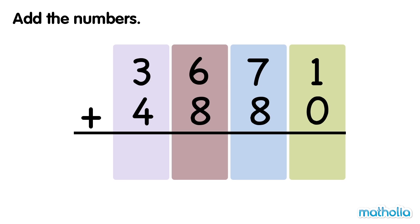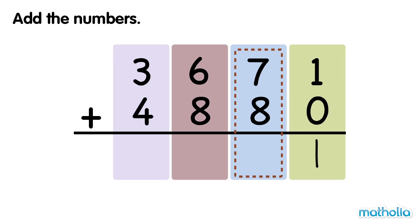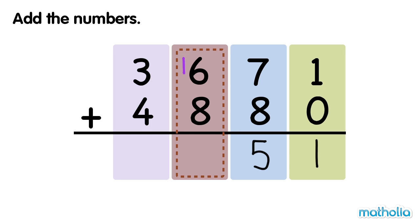Let's find 3,671 plus 4,880. Add the ones: 1 one plus 0 ones is 1. Add the tens: 7 tens plus 8 tens equals 15 tens. Regroup 15 tens into 5 tens and 1 hundred. Add the hundreds: 1 hundred plus 6 hundreds plus 8 hundreds equals 15 hundreds.